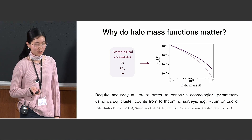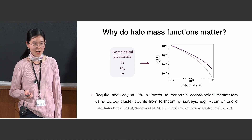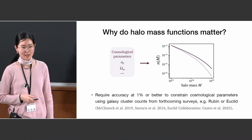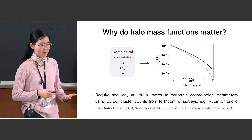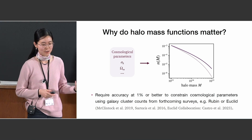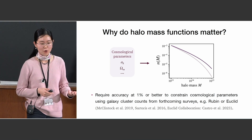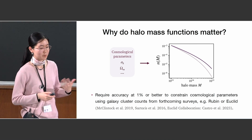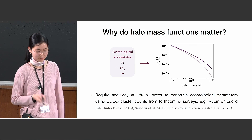The halo mass function is very sensitive to cosmological parameters, especially at the high mass end. To tightly constrain cosmological parameters using data from forthcoming surveys like Rubin or Euclid requires us to be able to model the halo mass function to a percent accuracy or even better.